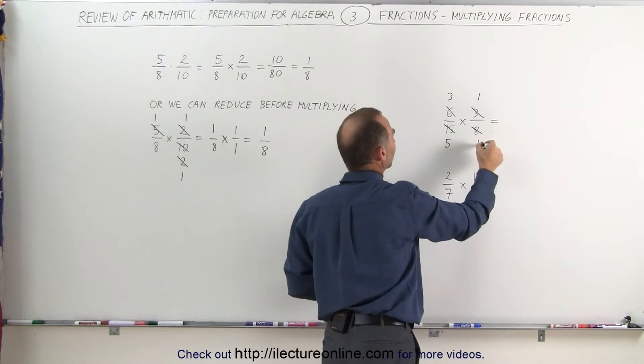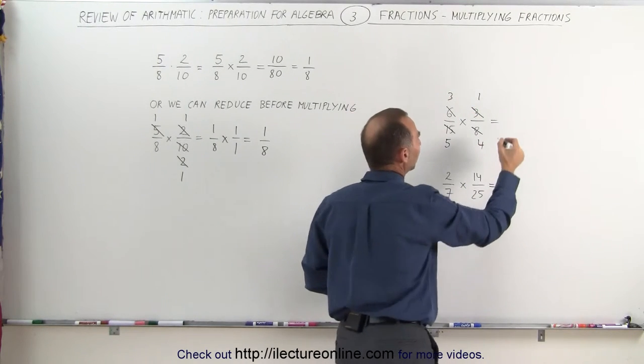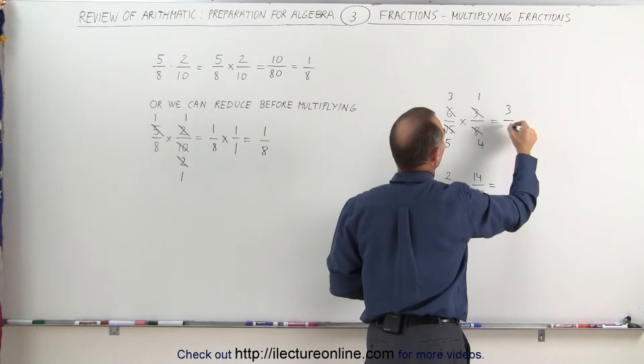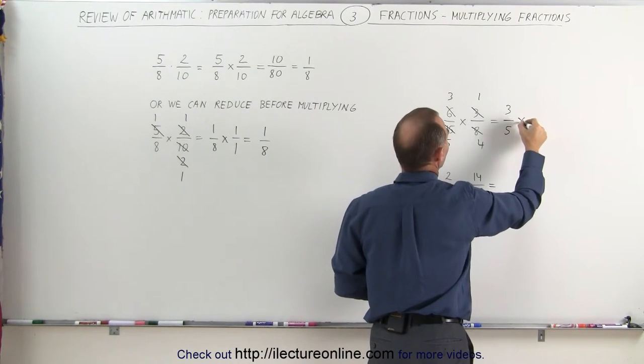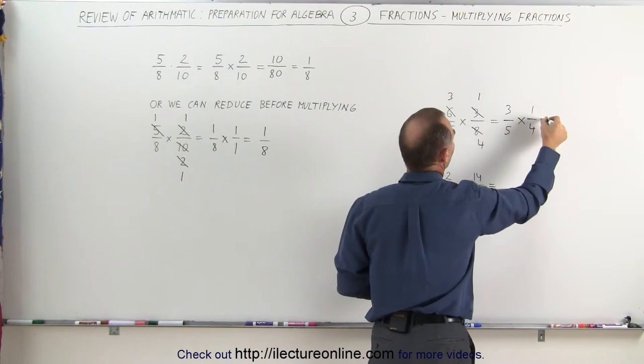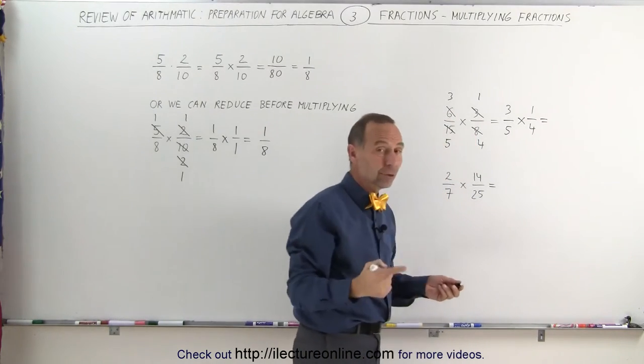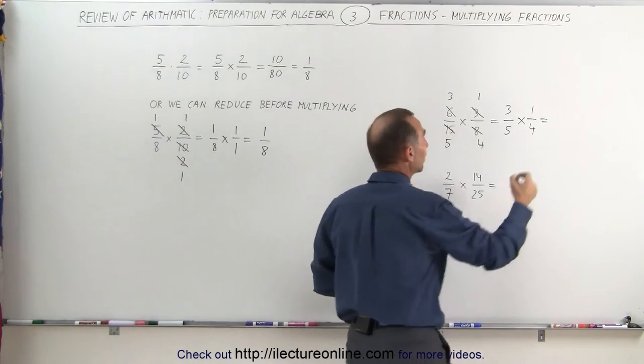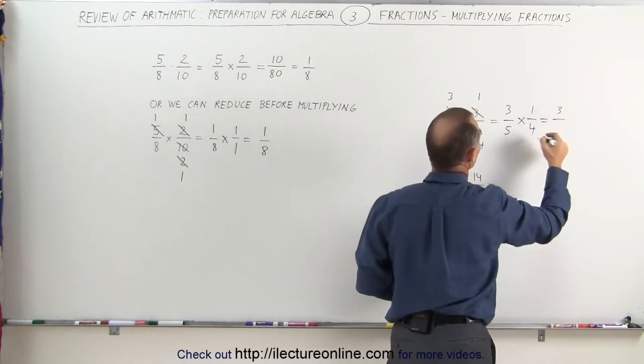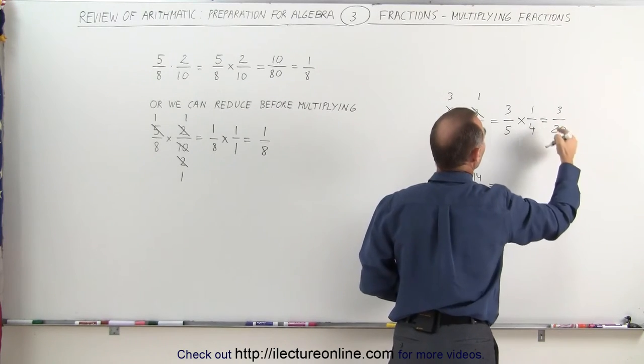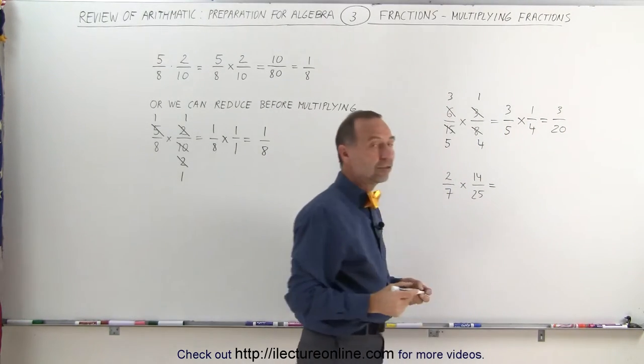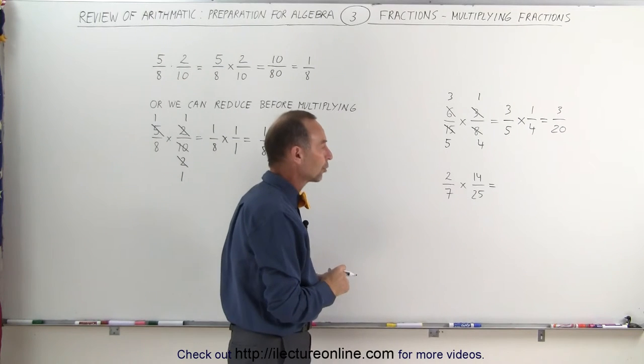8 divided by 2 is equal to 4. Now what we have left is we have 3 over 5 times 1 over 4. And now we can go ahead and multiply the numerators together: 1 times 3 is 3. And the denominators: 4 times 5 is 20. So the product of these two fractions is 3 divided by 20 or 3 twentieths.